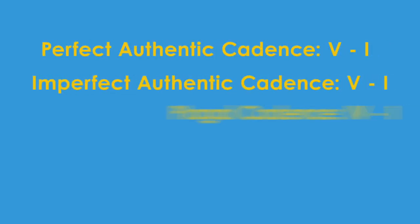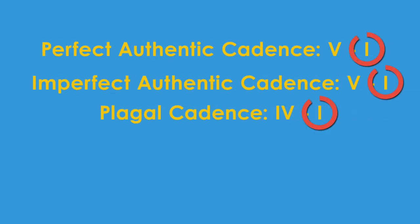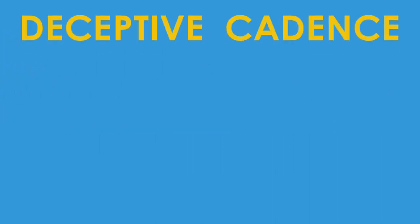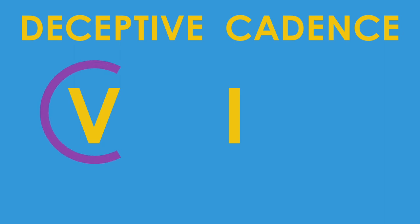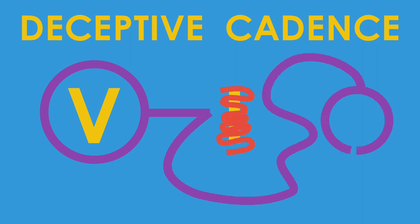So far we've only looked at cadences that end back on the tonic. Today we're going to look at a cadence that goes in a completely different direction: the deceptive cadence. Instead of ending on the tonic, this cadence starts on the 5 chord and ends on anything but the tonic. Usually this has the 5 chord resolving to the 6 chord, but anything other than 1 will do.